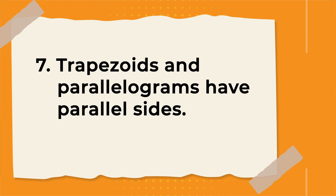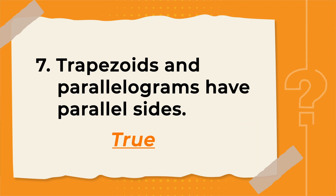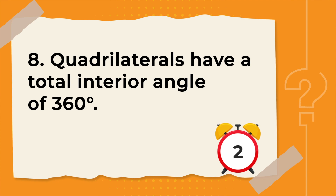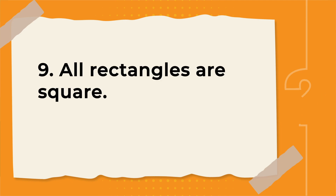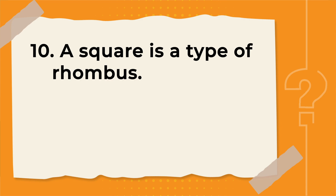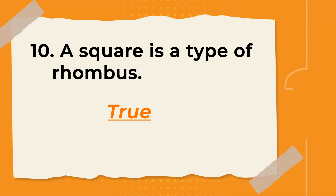Number 7: Trapezoids and parallelograms have parallel sides — true. Number 8: Quadrilaterals have a total interior angle of 360 degrees — the answer is true. Number 9: All rectangles are squares — false. Number 10: A square is a type of rhombus — true.